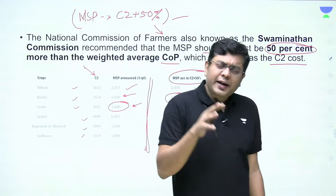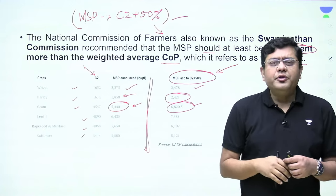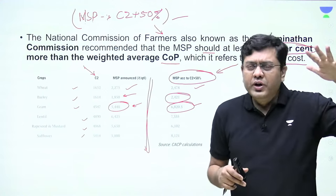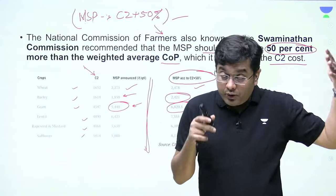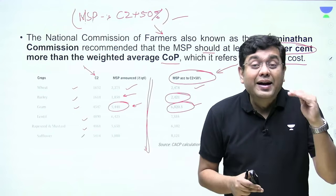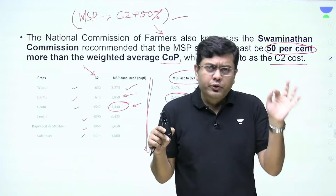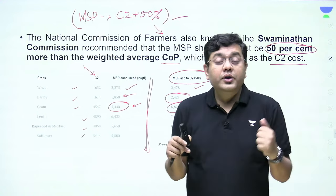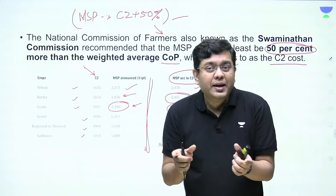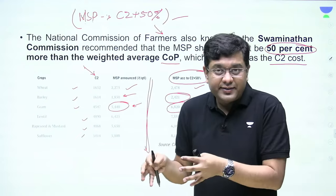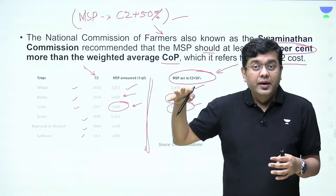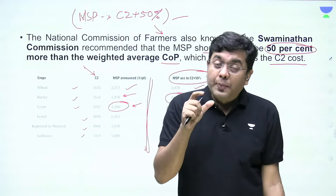Before the way forward, understand that no state or central government has the resources required to buy all grains from across the country at MSP prices. The argument that government spends on other things is valid, but expenditure under various heads is limited and restricted. You have to maintain overall fiscal deficit figures — you cannot allow the deficit to run away, as seen in states like Punjab.